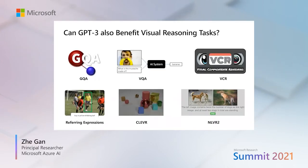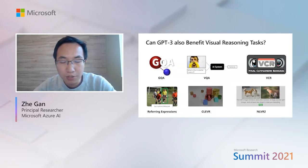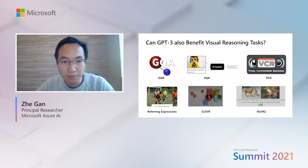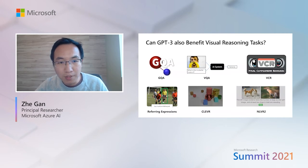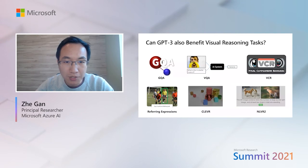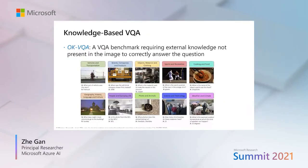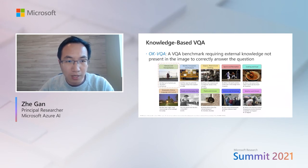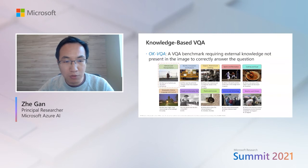Since GPT-3 is a language model, it naturally benefits pure NLP problems. But how about multimodal tasks? The question we are going to ask is: can GPT-3 also benefit visual reasoning tasks? We use the VQA task to illustrate visual reasoning — given an input image and a question, an AI system needs to predict the answer. Specifically, I will talk about a very challenging VQA benchmark called OK-VQA, where the model needs to use external knowledge not in the image to correctly answer the question. For example, given an image, if you ask 'what sort of vehicle uses this item?', the model must first recognize the item and then retrieve knowledge to solve the task.